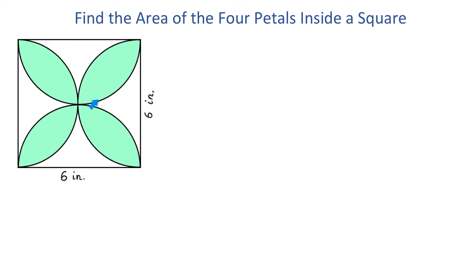This is the first semicircle, then the second, then the third and then the fourth. We need to find the area of these 4 petals.